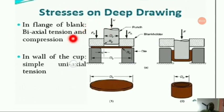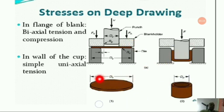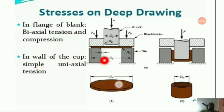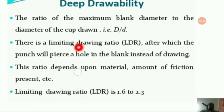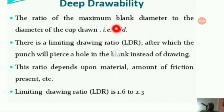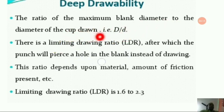Stresses on deep drawing: in the flange of the blank, biaxial tension and compression act; in the wall of the cup, simple uniaxial tension force is acting. The deep drawability ratio is the ratio of maximum blank diameter (capital D) to the diameter of the cup (small d). There is a limiting drawing ratio (LDR), after which the punch will pierce a hole in the blank instead of drawing.